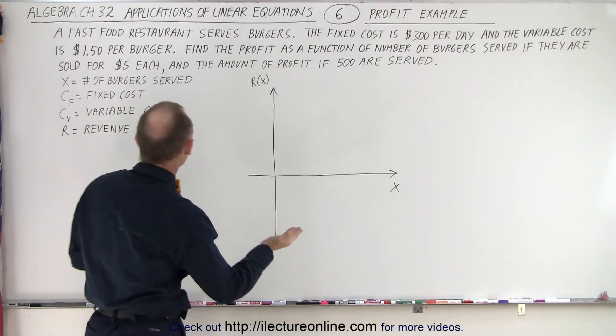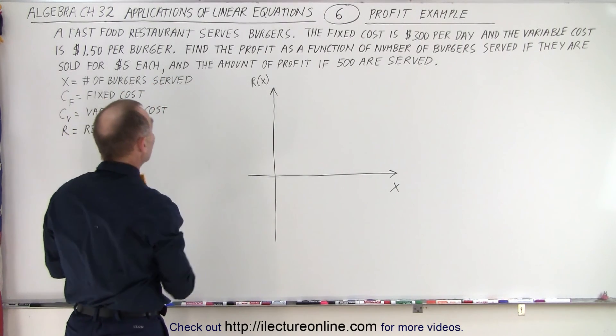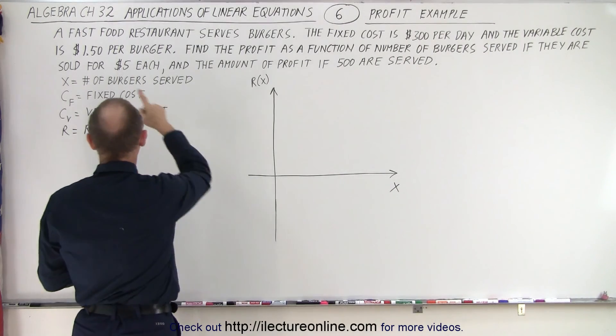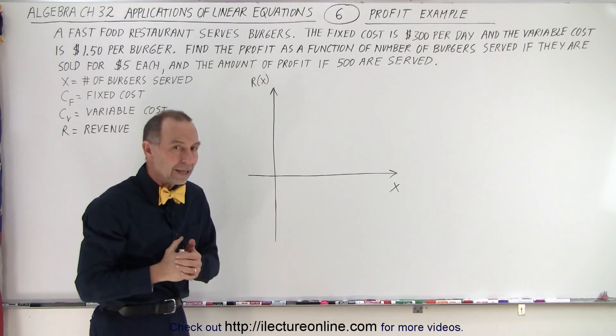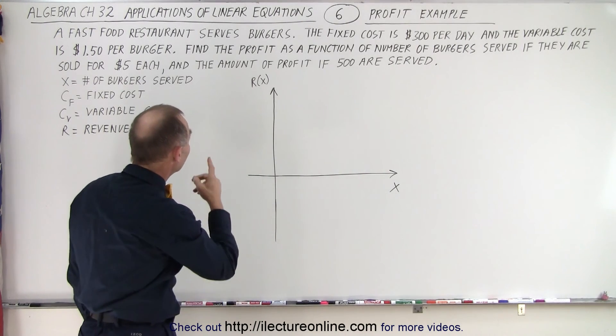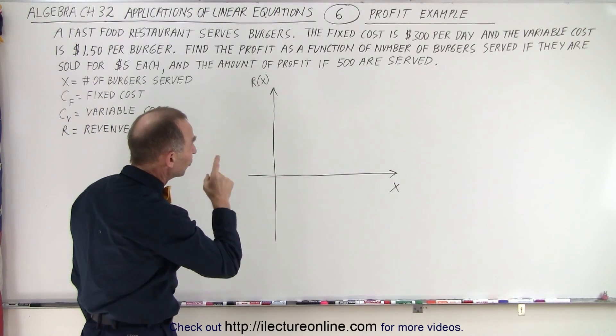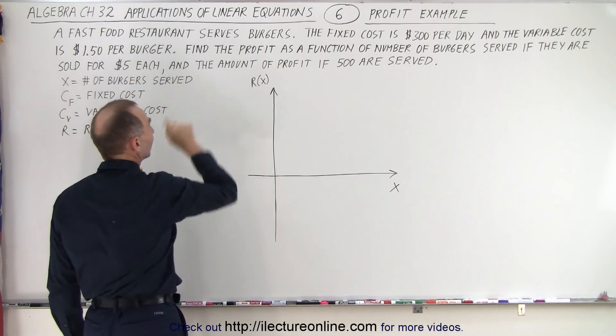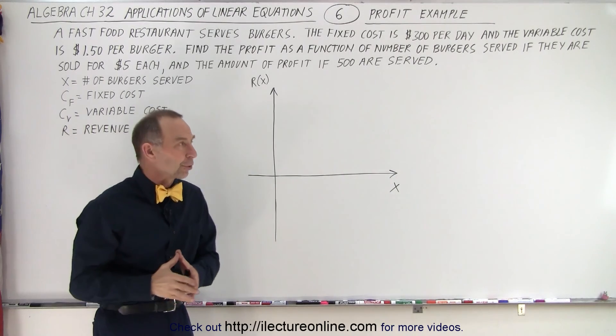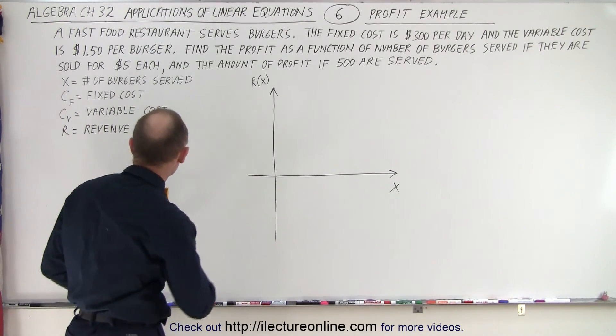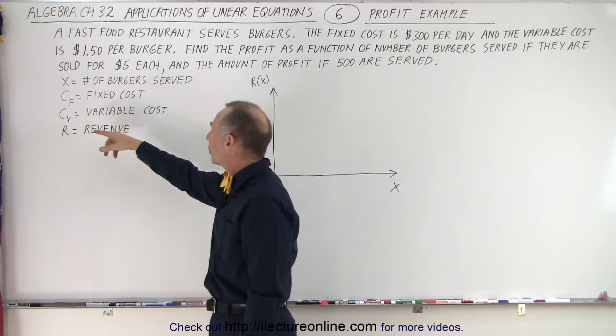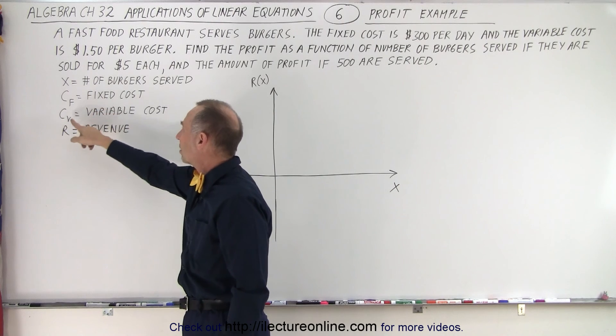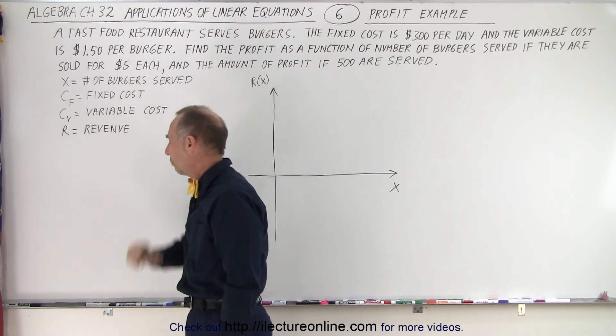So here in our example we're going to go back to our small restaurant, the fast food restaurant, where we're serving burgers. The fixed cost is $300 per day and the variable cost is still $1.50 for each burger that we make for the food cost for the burger. And then we're supposed to find the profit as a function of the number of burgers served if they are sold for $5 each and the amount of profit if 500 of the burgers are served. So here's the letters we're going to use. X is going to represent the number of burgers. C sub f is the fixed cost. C sub v is the variable cost. And R is used for revenue.